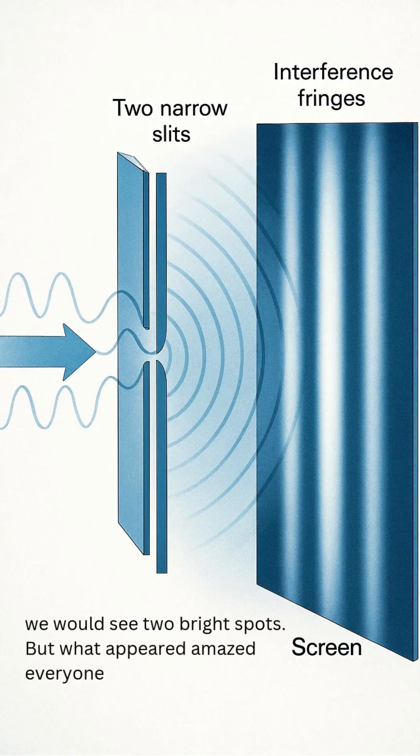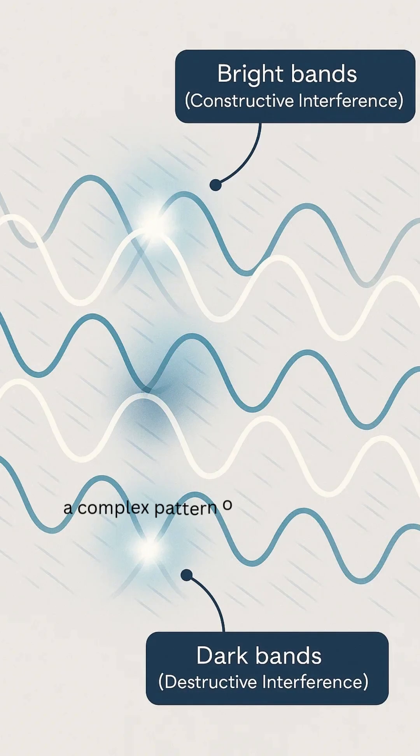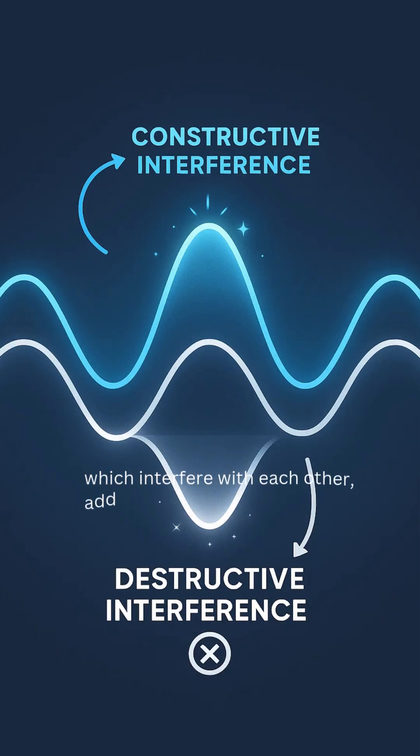But what appeared amazed everyone, a complex pattern of bright and dark bands. These fringes prove that light creates waves, which interfere with each other, adding up in some places and cancelling out in others.